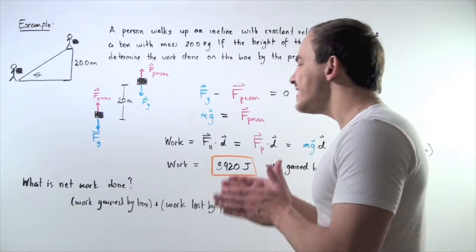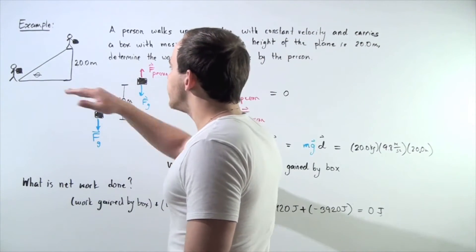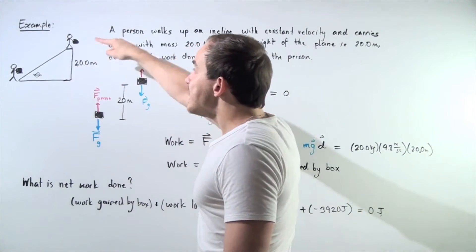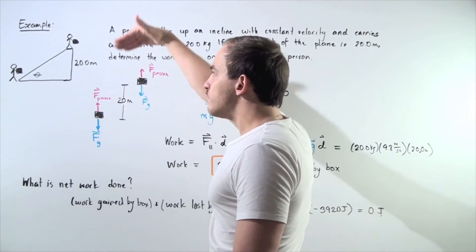And also, what exactly is the net work done? Well, let's begin by looking at our diagram. Notice that the displacement of the box along the y-axis, along the vertical axis, is equal to the height of the inclined plane.